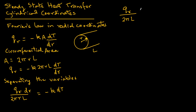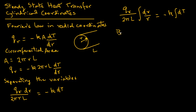l is constant and is kept outside the integral. Inside the integral we have dr divided by r. On the right-hand side we have minus k — k being the thermal conductivity, which is constant — and then the integral of dT inside the integral.